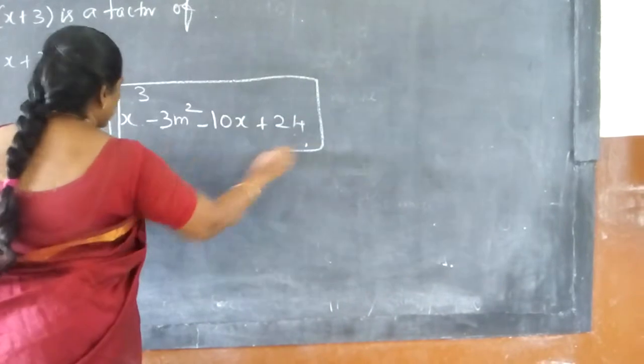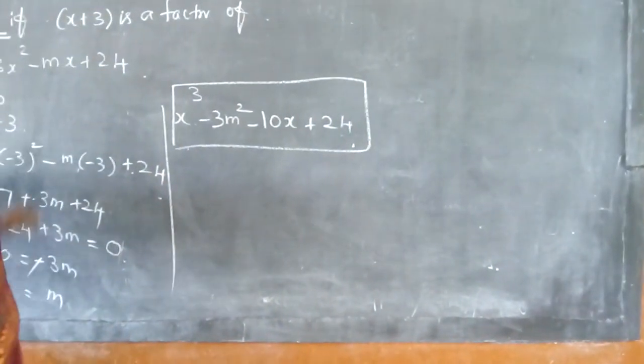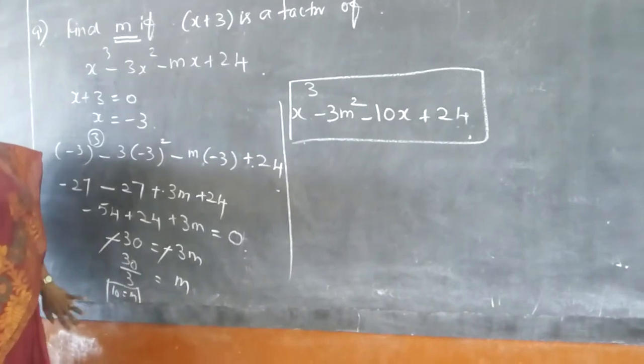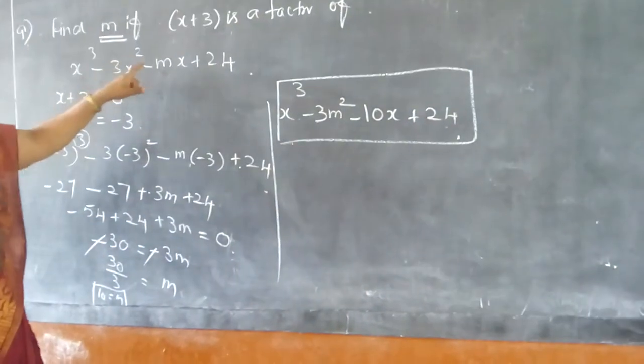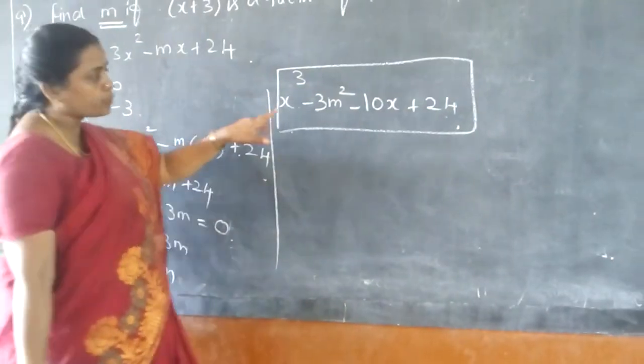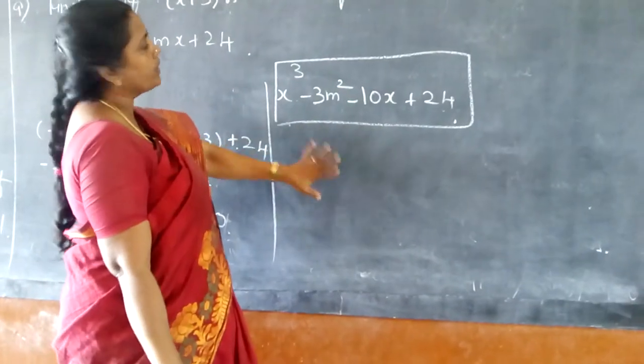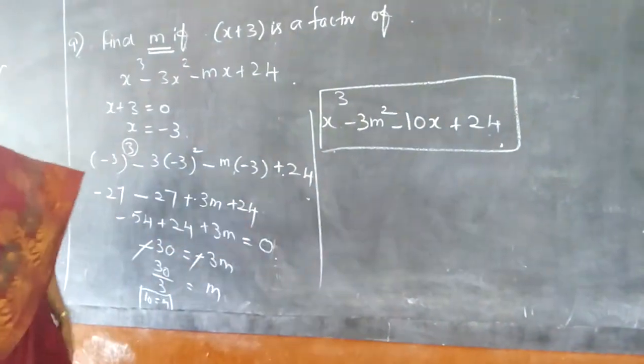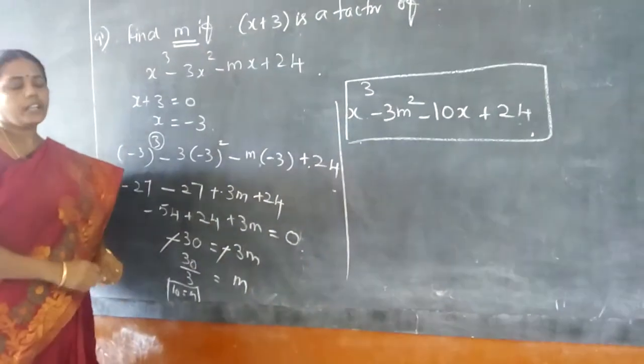Since you are going for the next year board examination, please remember that once if you get the answer, if you stop with it, then you will not get the full marks. You have to substitute the value of m and you have to give the whole polynomial. Then you will be getting the whole marks for this question. So keep remember of that. Thank you.